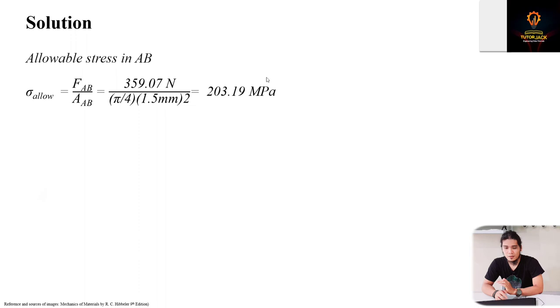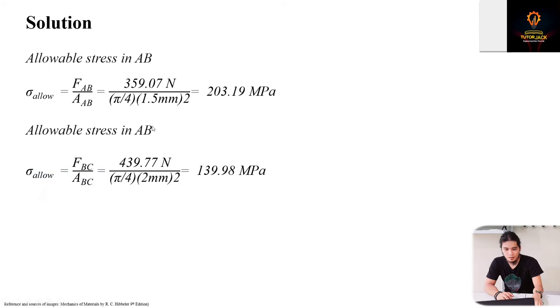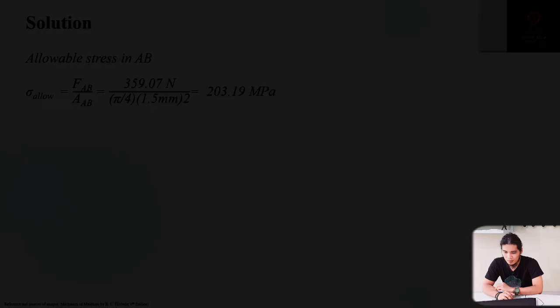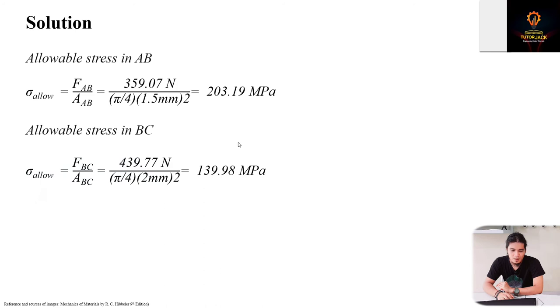Allowable stress in BC - this should be BC - the allowable stress for BC is 439.77 newtons with this area. BC is larger at 2 mm, and with the force we calculated, we get 139.98 megapascals. These are the allowable stresses for wires AB and BC respectively.